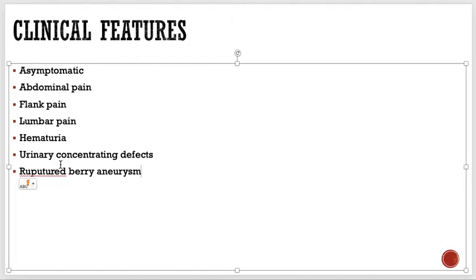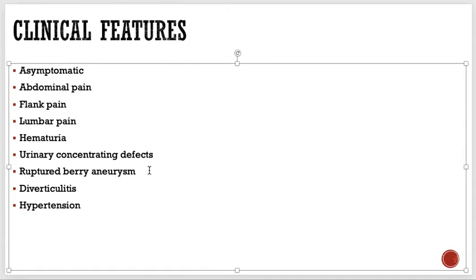Many patients present with a ruptured berry aneurysm, which means they present with stroke. Some may also present with diverticulitis, as they can have diverticulosis. A very interesting feature is hypertension — the cysts cause pressure on the intrarenal arteries, leading to reduced blood supply to parts of the kidney, which activates the renin-angiotensin-aldosterone system, resulting in hypertension.